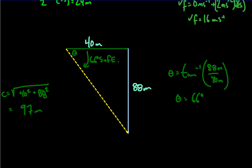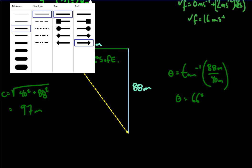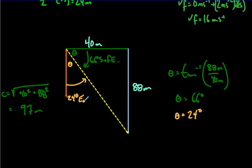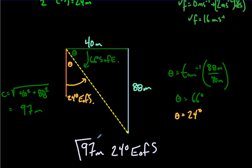We have a rule that when we get a number larger than 45 degrees, we take the smaller of the possible angles. So instead of 66 degrees south of east, we look at the complementary angle: 90 − 66 = 24 degrees. So we'd call this 24 degrees east of south. The final answer is 97 meters, 24 degrees east of south — tying together kinematics and vector work.